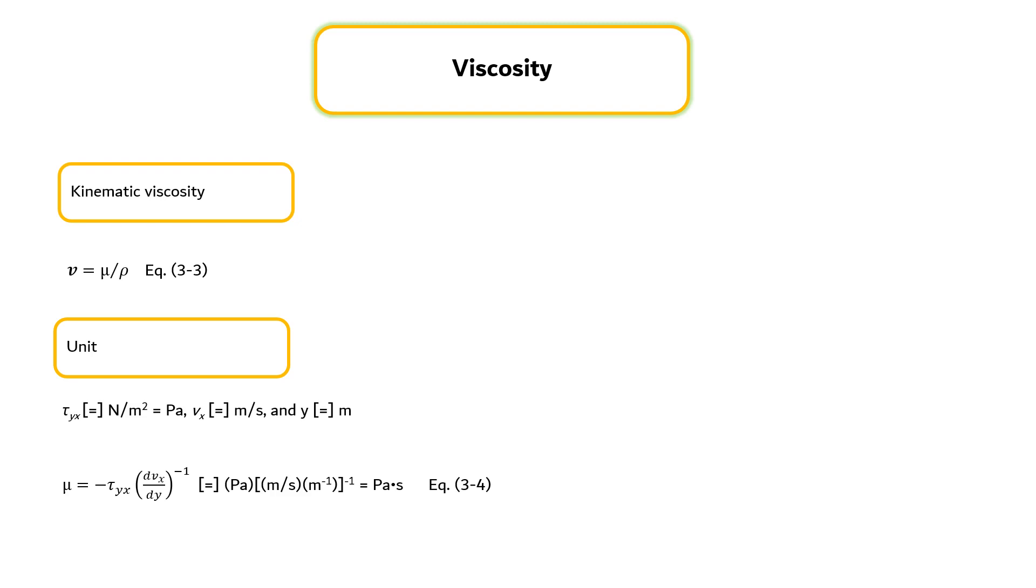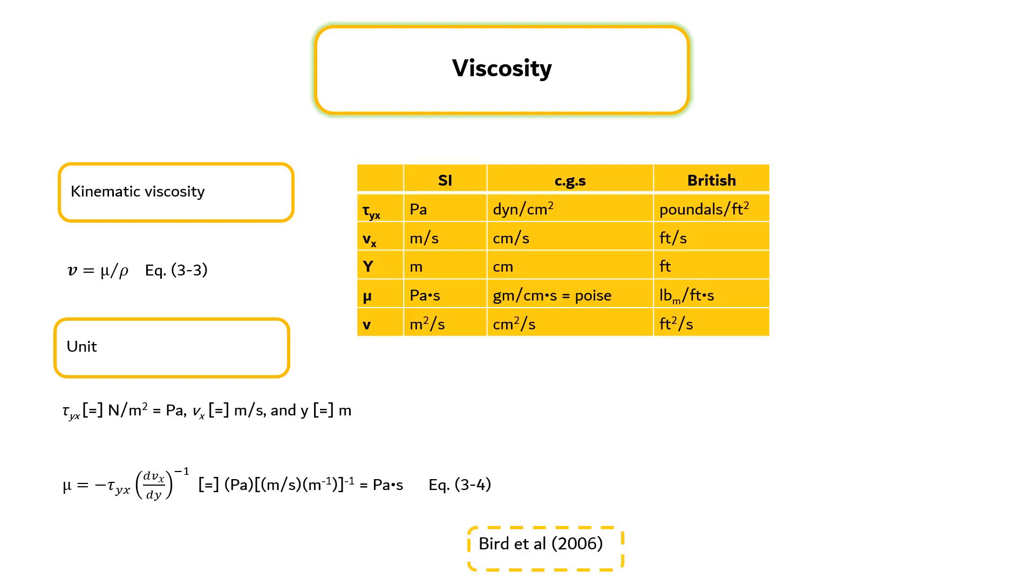Kinematic viscosity is the ratio of viscosity to density of a fluid, as shown in equation 3.3. The unit for viscosity can be defined as shown in equation 3.4. The unit for each variable involved in Newton's law of viscosity is shown in the table.